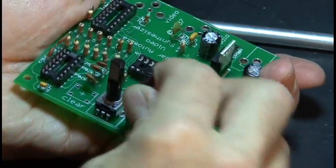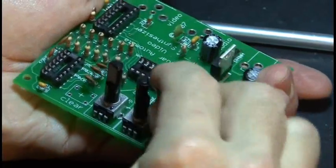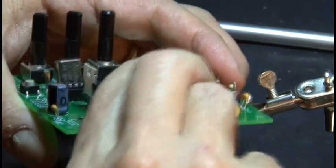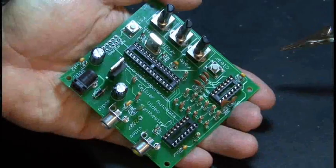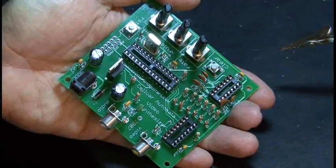The remaining components are some potentiometers, a couple of push-button switches, the power jack, and our audio and video connectors, so we'll put those in now. Okay, our PCB is done.